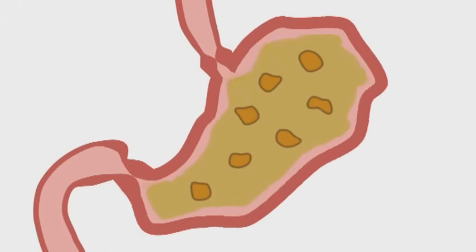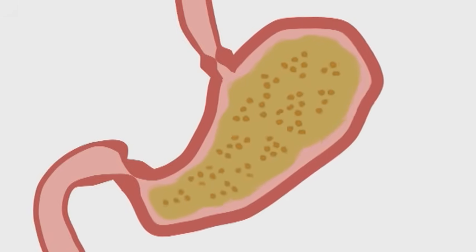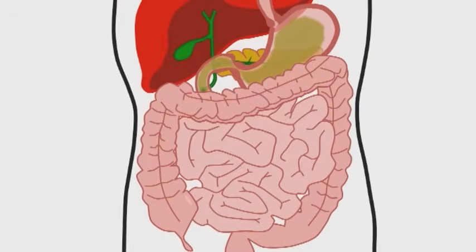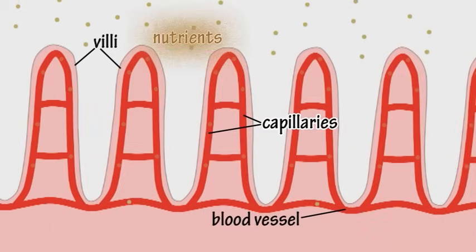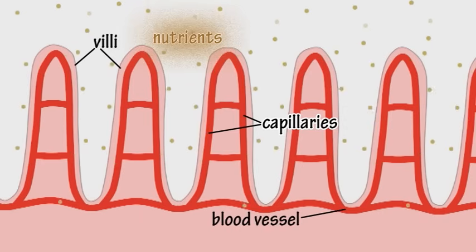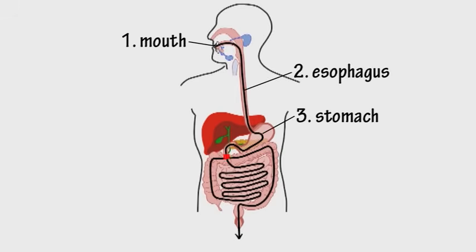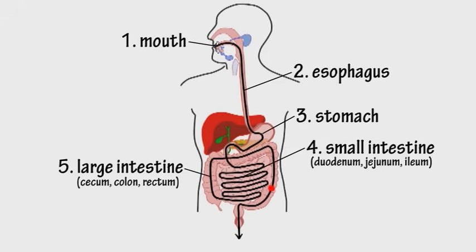After being churned in the stomach for a time, it becomes a liquid that is known as chyme. This is further broken down by enzymes and absorbed through the walls of the small intestine, whose surface area is greatly increased by lots of finger-like projections called villi. Do you know the general direction that food travels during the process of digestion?